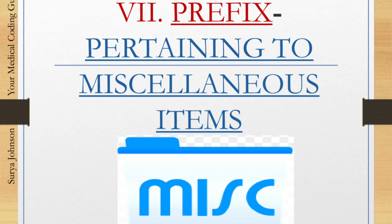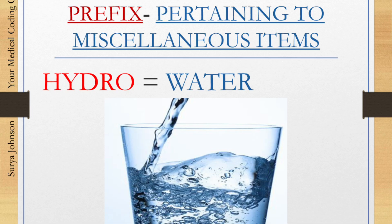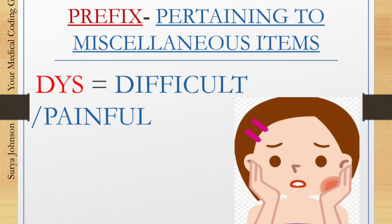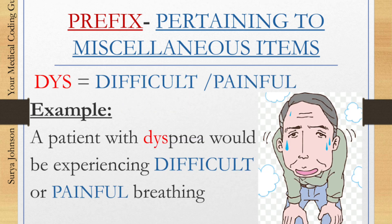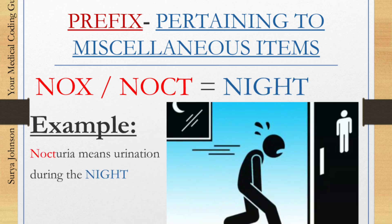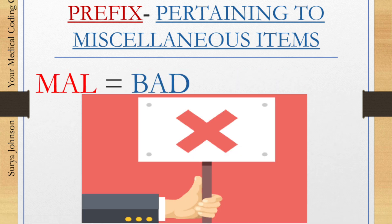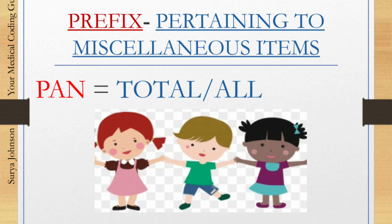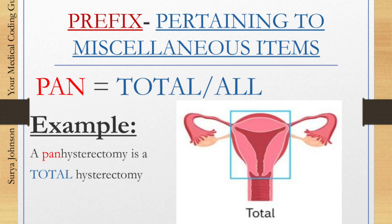We'll see other miscellaneous prefixes that do not fit into separate categories. 'Hydro' means water. Example: hydrophobia means fear of water. 'Dys' is a prefix meaning difficult or painful. A patient with dyspnea is experiencing difficulty in breathing. 'Nox' or 'noct' are prefixes meaning night. Example: nocturia means urination during the night. 'Mal' is a prefix meaning bad. Example: malodorous means a bad or foul smell. 'Pan' is a prefix meaning total or all. Example: pan-hysterectomy means a total hysterectomy.